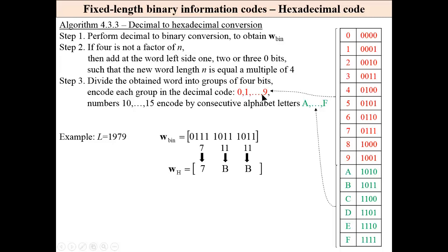Zero, one, up to nine, and numbers 10 up to 15 are encoded by consecutive letters A to F, like in this table. So seven is seven, eleven is B. Eleven corresponds to this binary number, it is eleven and eleven corresponds to B.